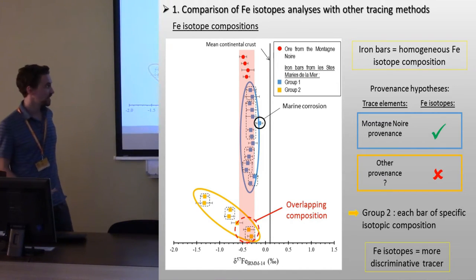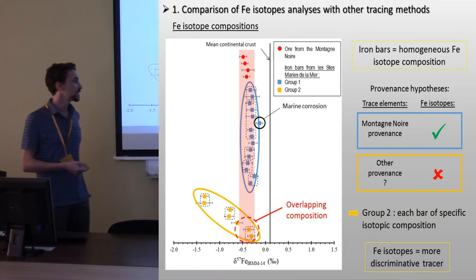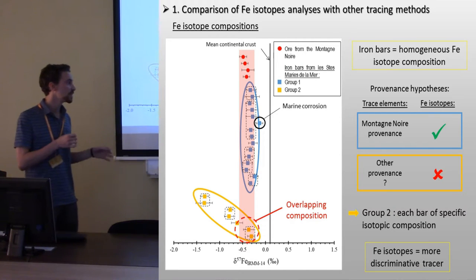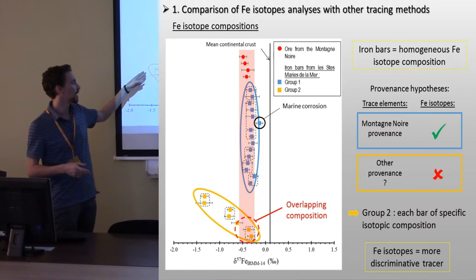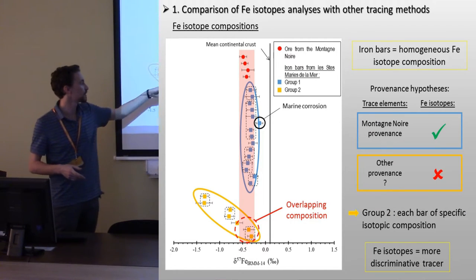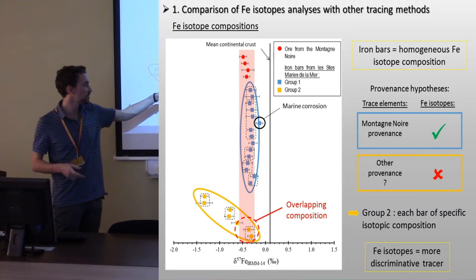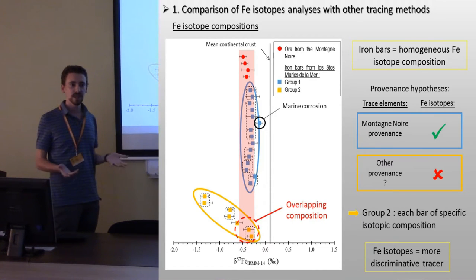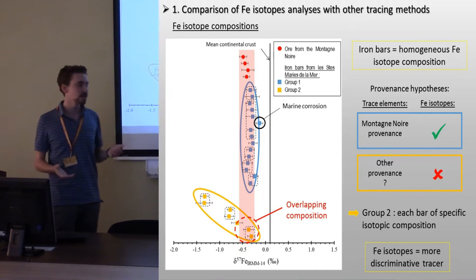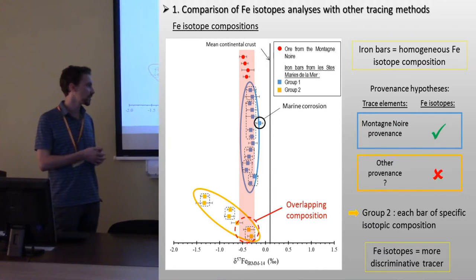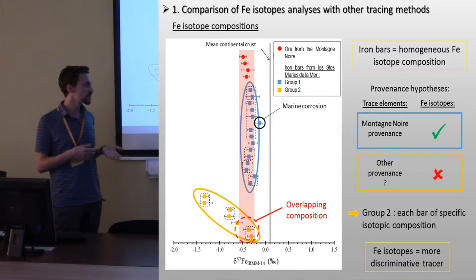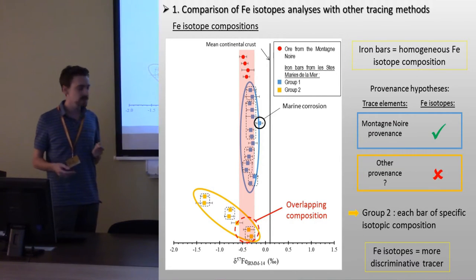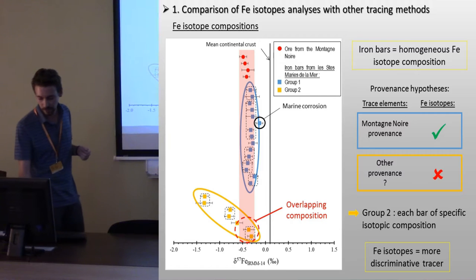An interesting thing here is that each bar has its own iron isotopic composition, which is not the case for elemental composition. So, iron isotopes provide a more discriminative tracer.